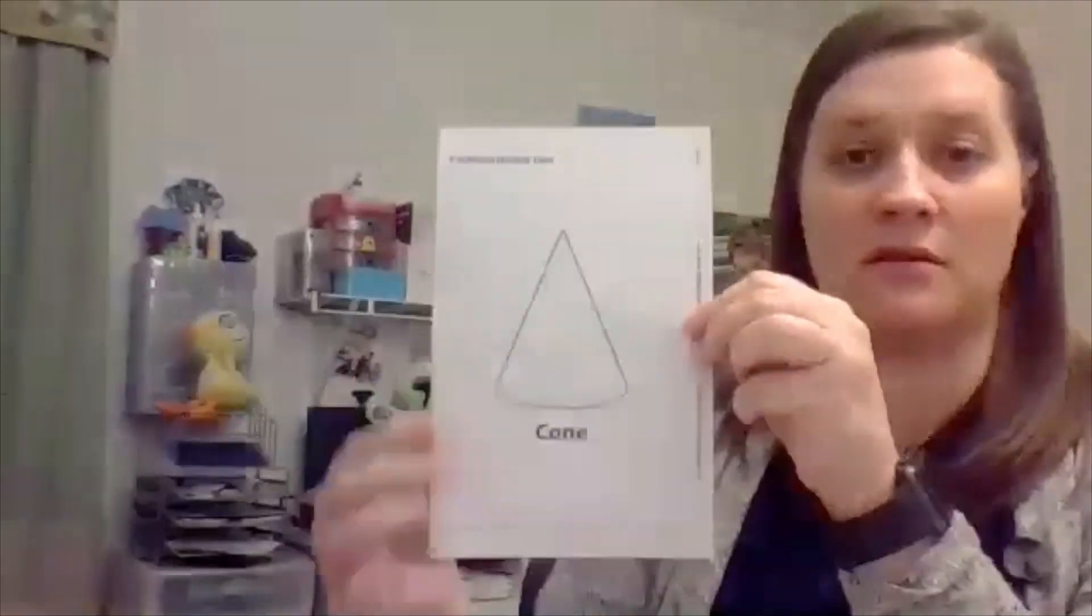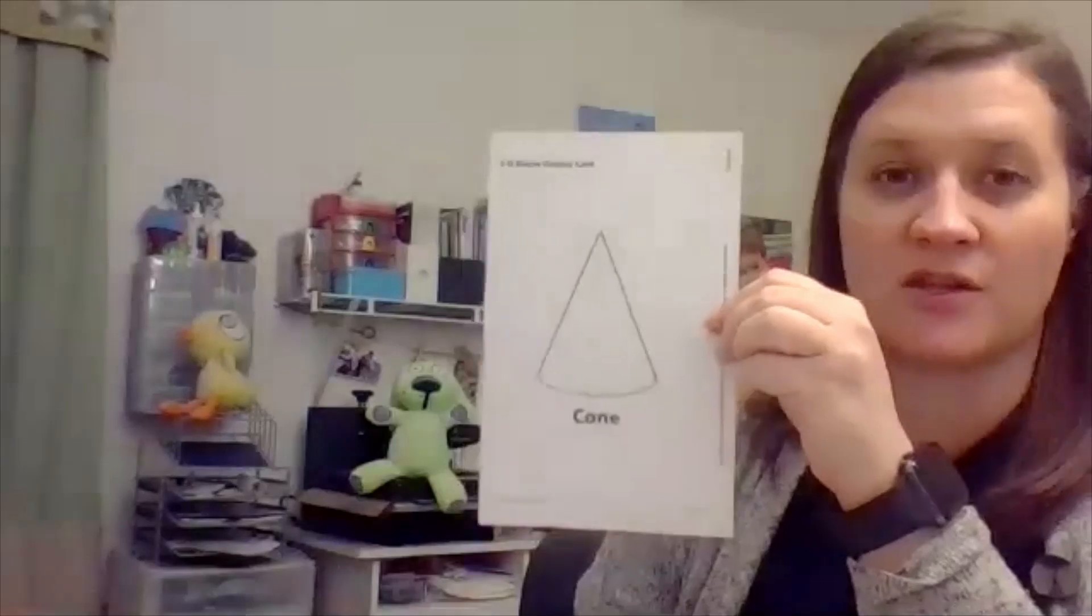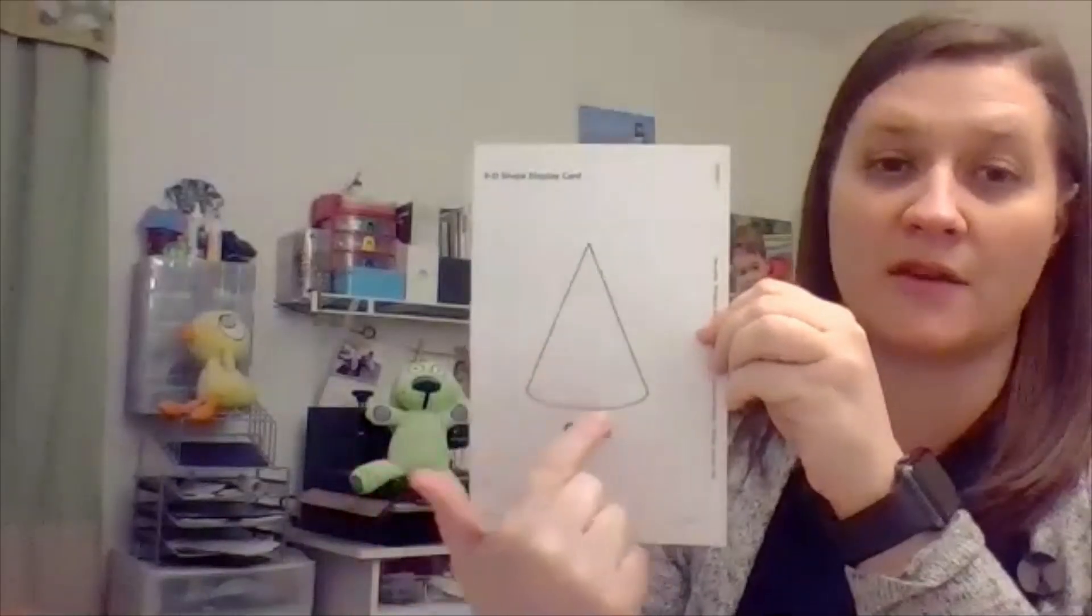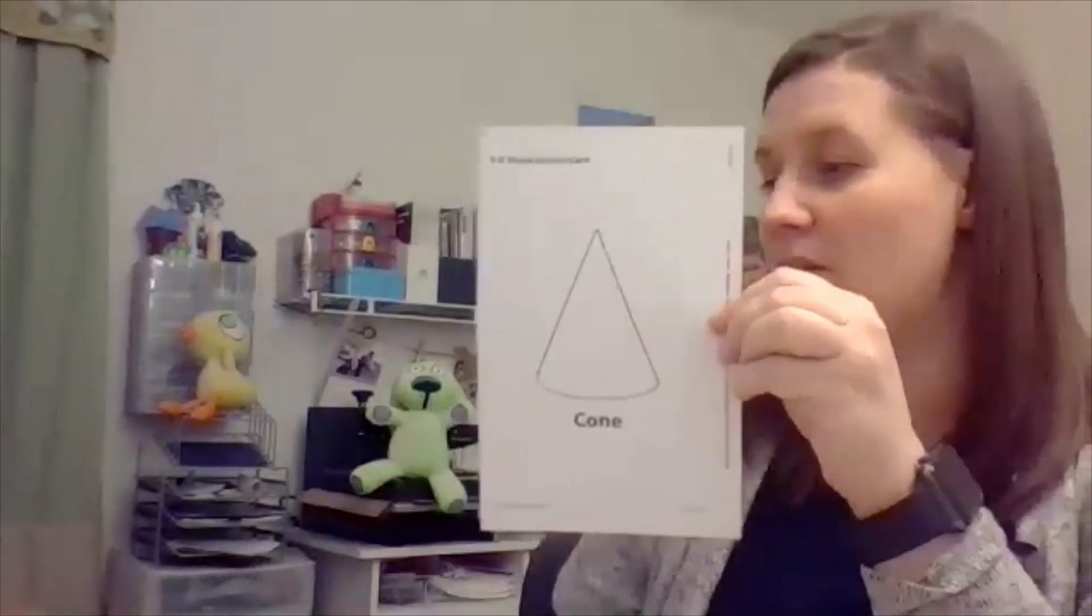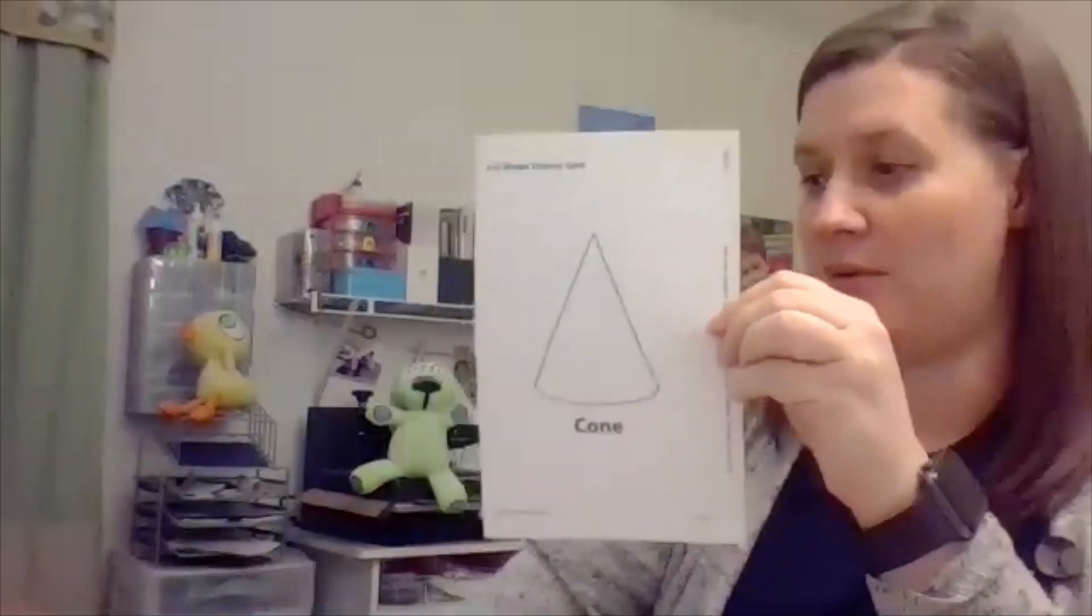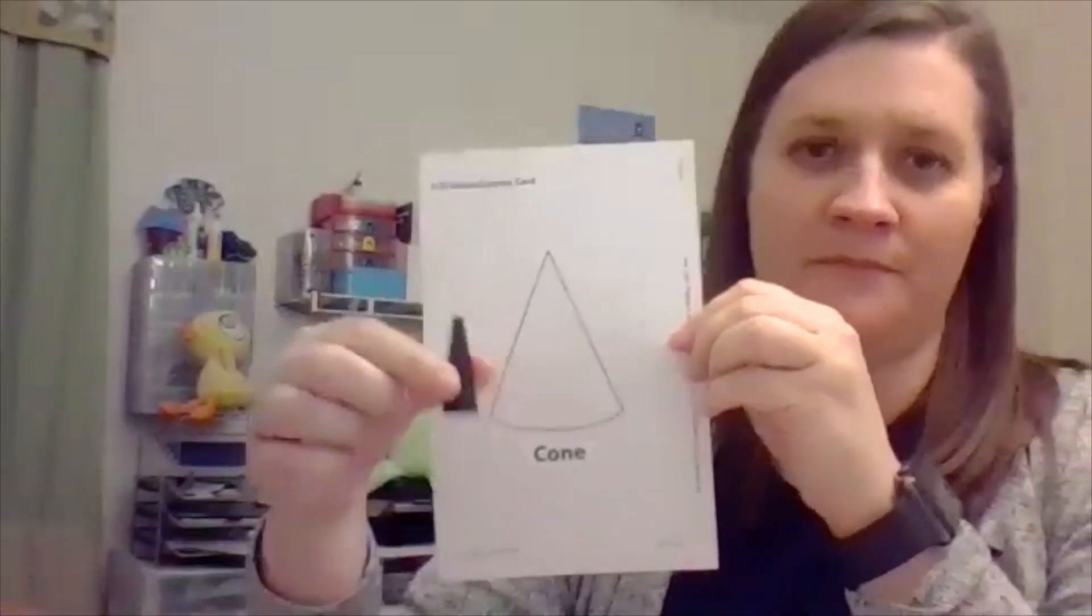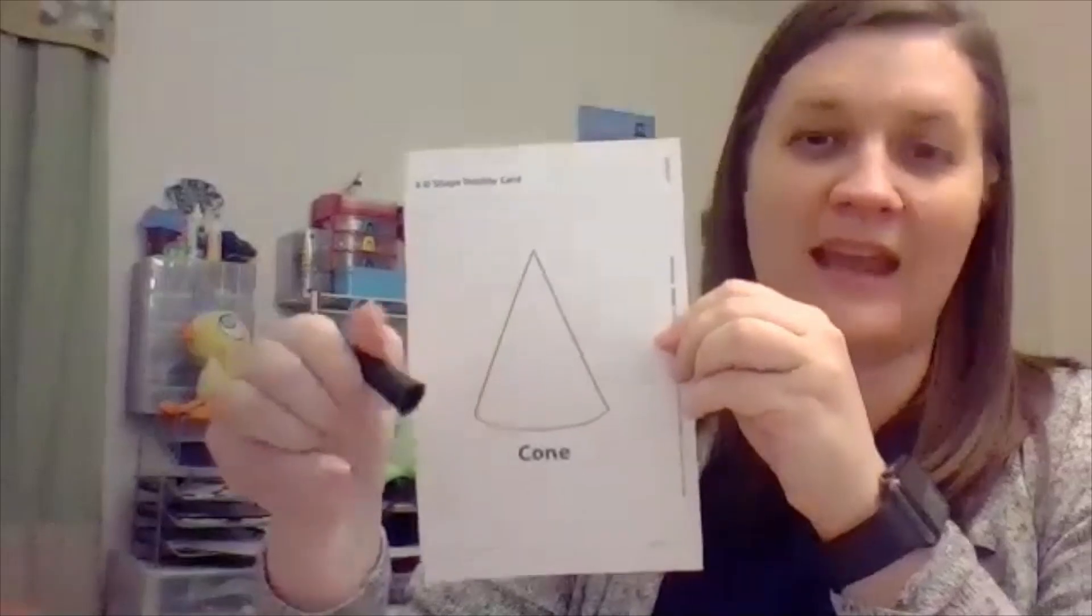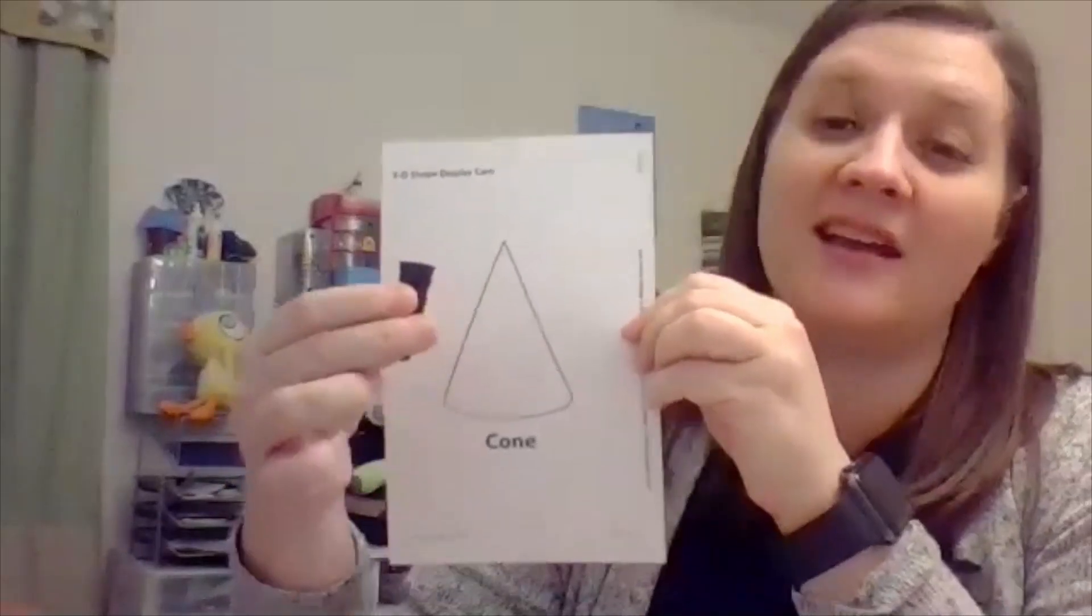Here's my next card. It does look like a triangle, but there's a curve at the bottom and triangles have straight lines. Let me find my shape. It's a cone. Now this was a hard shape for me to find in my house. So I found a lid. It has a circle on the bottom, but then it's curved so it rolls and then it all comes to a point at the top. So that's my cone.